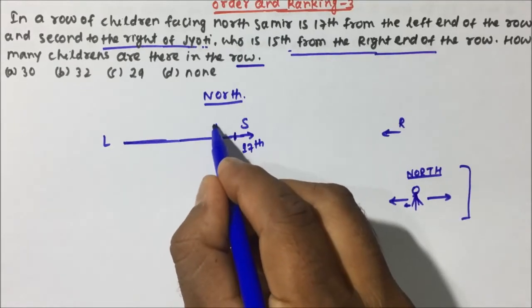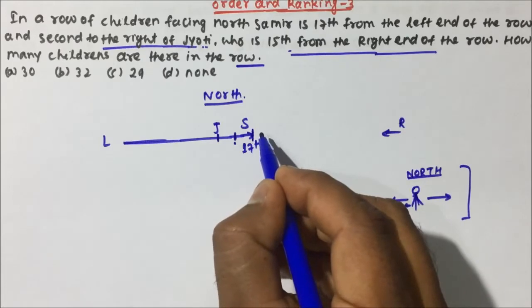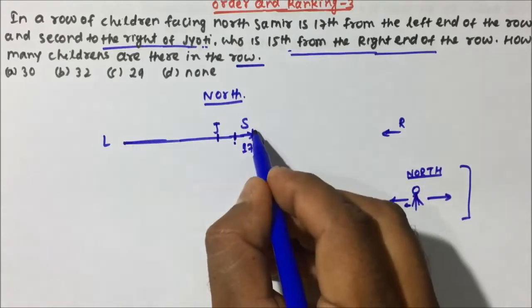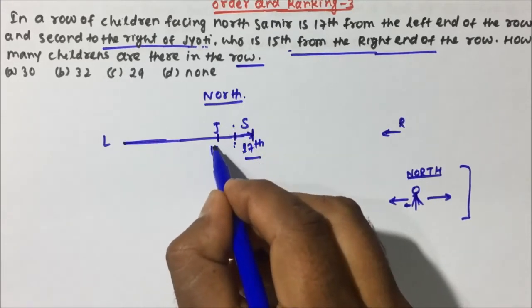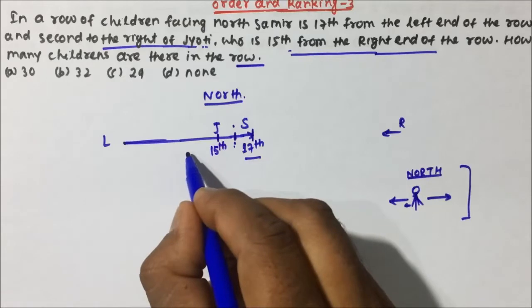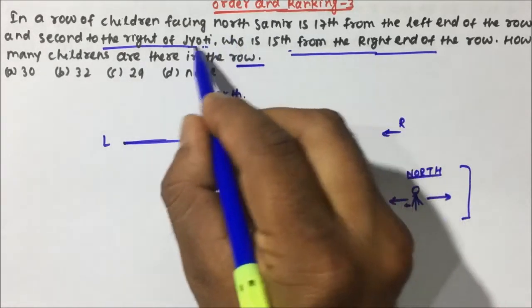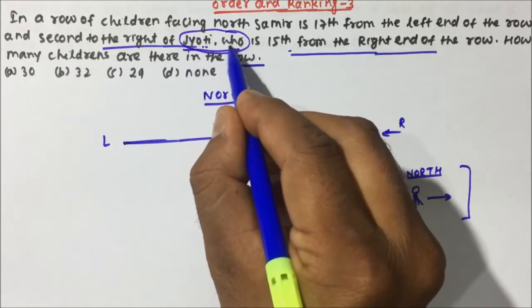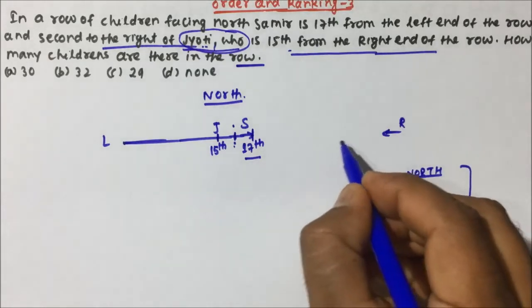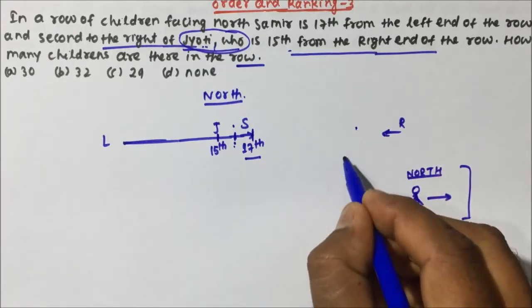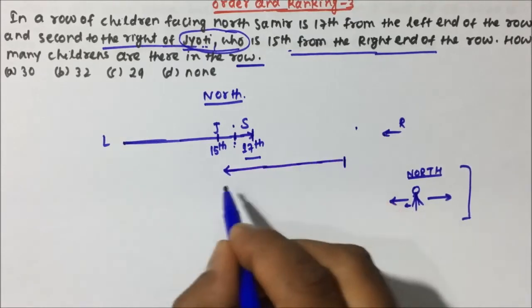Suppose if Jyoti is here, then Jyoti's first right and then second right will be Samir. So from the left side, Samir's position is 17th. So the position before Samir will be 16th, and Jyoti's position will be 15th from the left. Now Jyoti is also 15th from the right end, so from the right end, Jyoti's position is 15th.